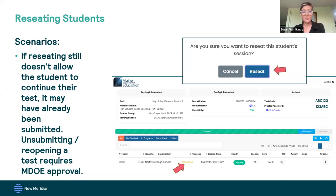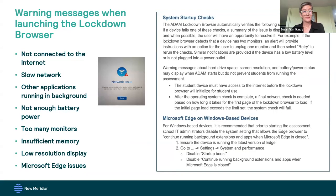Sometimes if the student is unable to get into their test and reseating does not resolve that, it could be that their test has already been submitted. If that's the case, then unsubmitting a test or reopening a test in any way requires approval from Maine Department of Education. You can contact the help desk and we'll work with you to contact Krista to get approval.